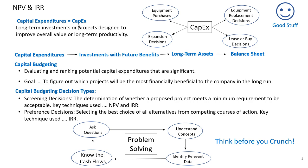Solving CapEx problems focuses on decisions to fund long-term investments designed to improve the company's overall value or long-term productivity. CapEx includes investments like the purchase of new equipment and the replacement of old equipment, such as machinery or computers, expansion decisions relating to the construction or purchase of new buildings, and decisions related to the purchase or lease of vehicles or store locations.